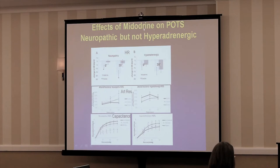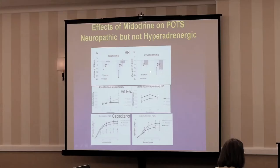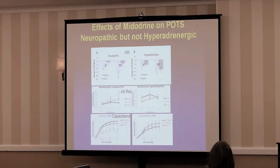We recently published on the effects of midodrine in these two variants. In a small double-blind crossover study, we found a good effect of midodrine in neuropathic POTS — the delta heart rate was clearly different from placebo. In the hyperadrenergic group it also seemed different from baseline, but not different from placebo, suggesting the hyperadrenergic group is having a strong placebo response. That raises the question: should you give patients placebo?